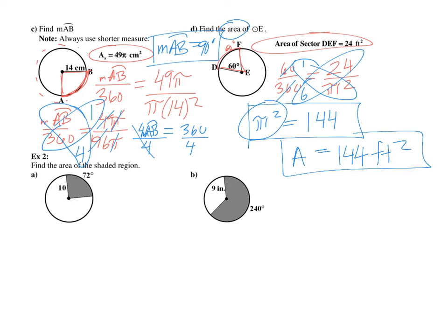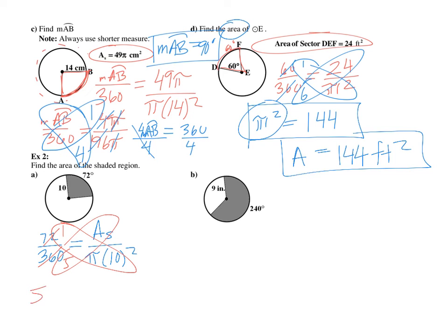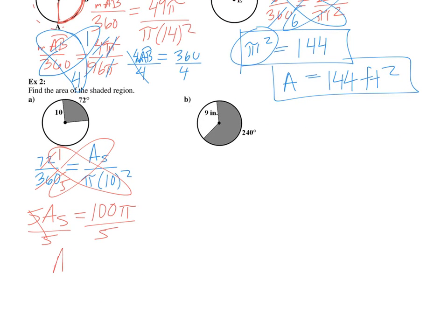Example two: find the area of the shaded region — it's a sector. Using the same formula: 72 over 360 equals the area of the sector over pi times 10 squared. Simplifying: 72 goes into 72 once and into 360 five times, giving one-fifth. Cross-multiplying: 5 times the area of the sector equals 100 pi. Dividing by 5, the area of the sector equals 20 pi units squared.